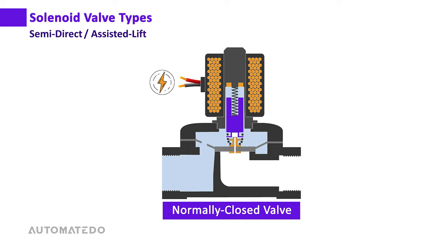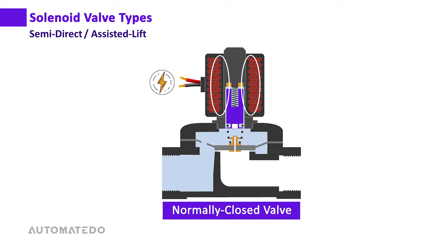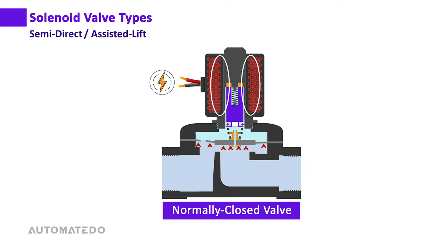When the solenoid energizes, an electromagnetic field is generated which moves the plunger upwards. As the plunger lifts, it also raises the diaphragm and simultaneously opens the orifice, connecting the upper chamber to the outlet. This reduces pressure in the upper chamber, and the diaphragm is now lifted by both the plunger and the resulting pressure differential.